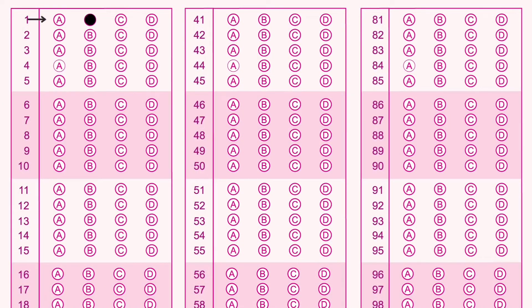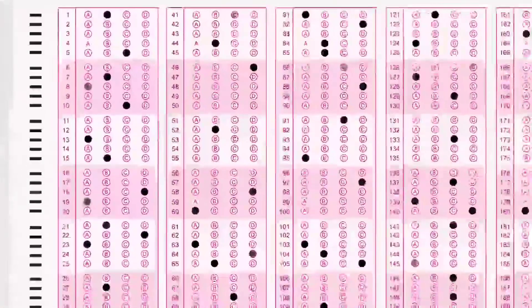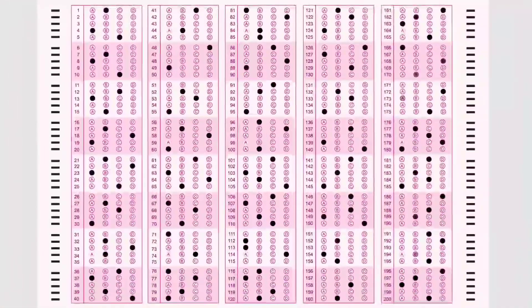So if the answer to a question is B, then you select option B. For example, if you have the answer to the first question as B, you can select it. Okay, that's all.